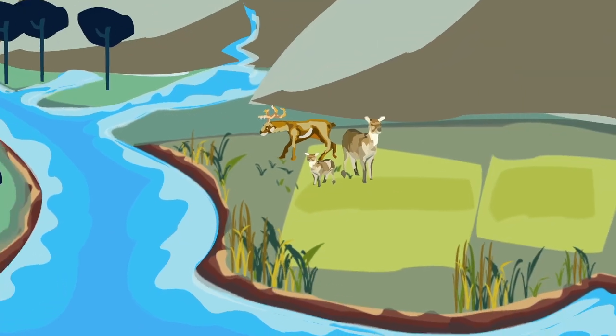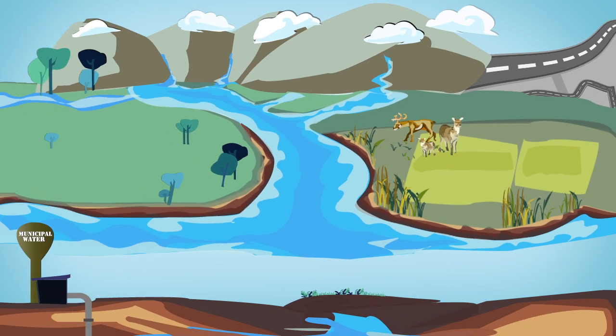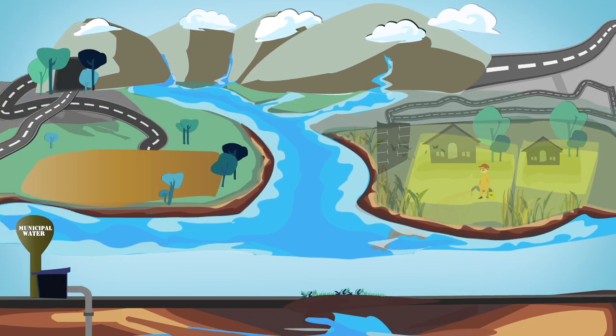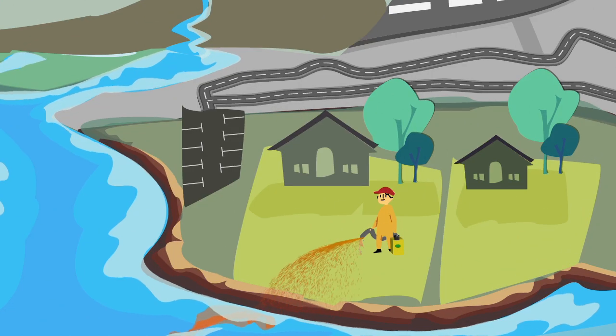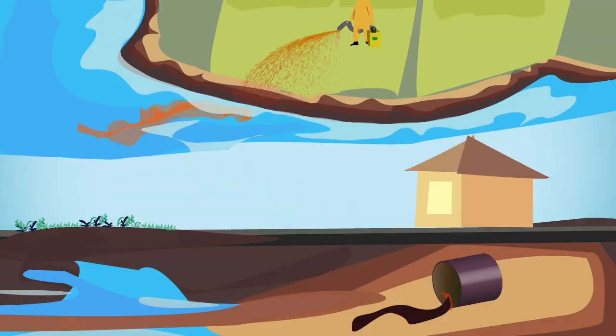As we develop the landscape, we create more impervious surfaces and change the natural water cycle. When it rains, water can no longer seep into the ground. Instead, it travels as runoff, picking up pollutants on its way to rivers and streams.